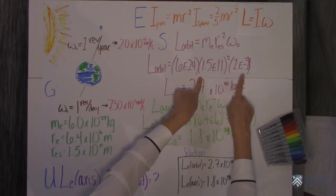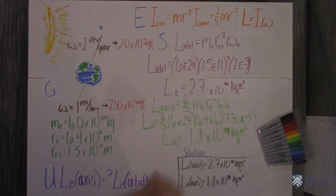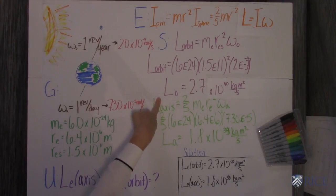And the angular velocity, which is 2 times 10 to the negative 7th. Plug it in and you get that the angular momentum of the Earth in its orbit is a huge number, 2.7 times 10 to the 40th kilogram meters per second.